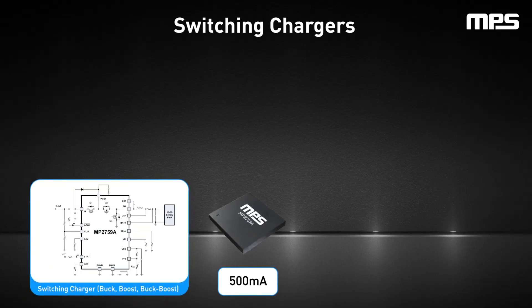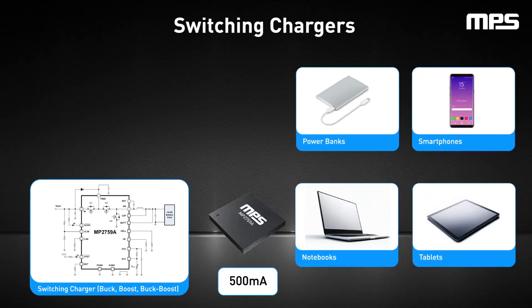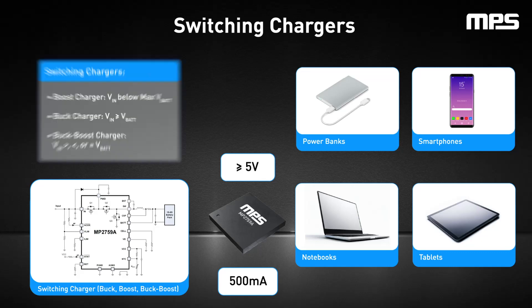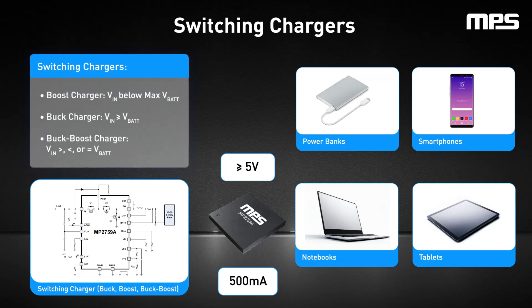Switching chargers are also recommended for USB applications, which generally have voltages equal to or exceeding 5 volts. There are three switching charger topologies to choose from based on the input voltage and the maximum battery voltage. If VIN is below the maximum VBAT, choose a boost charger. If VIN is greater than or equal to VBAT, choose a buck charger. If VIN may be greater than, less than, or equal to VBAT, choose a buck-boost charger.